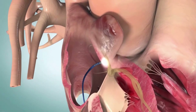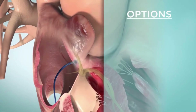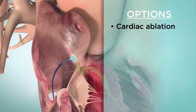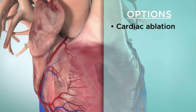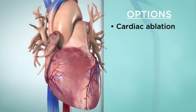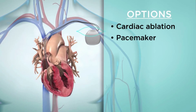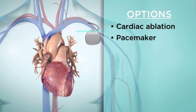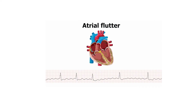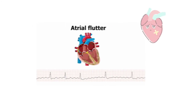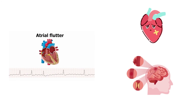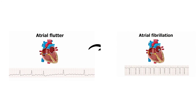Other options may include a procedure called cardiac ablation, which can help your heart stay in a normal rhythm. Sometimes, electronic devices like a pacemaker may be needed to control the rhythm of your heart. Even if atrial flutter doesn't bother you, you still need treatment to avoid problems such as heart failure or stroke.